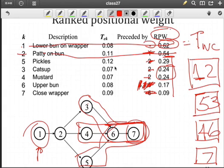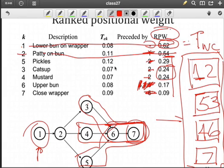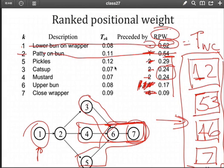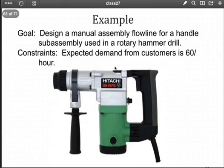Well, as you can see, all three methods, largest candidate rule, the Kilbridge-Webster approach, as well as rank positional weight, gave us the exact same design for our assembly system. Now, this will not always be the case, especially as you have a larger number of tasks, these methods will diverge. Let's look at an example.